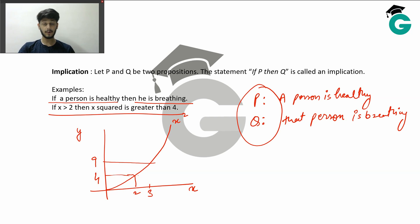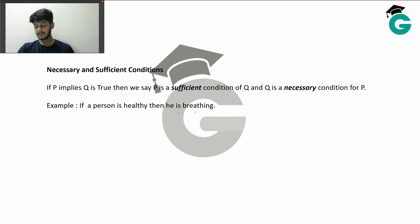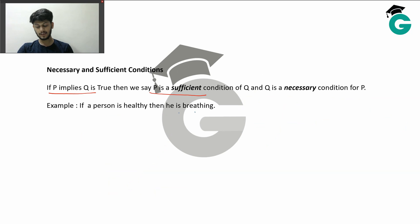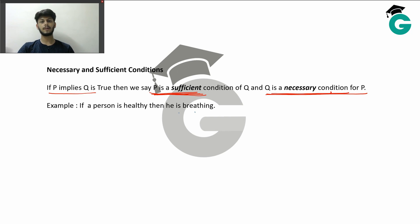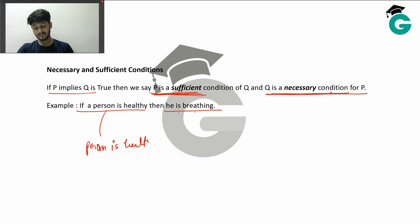Now let us move on to some terms you might find in your economics books: necessary and sufficient conditions. Going back to the implication — if P implies Q is true, then we say P is a sufficient condition. So in the example 'if a person is healthy, then he is breathing,' being healthy is a sufficient condition for that person to be breathing, which is true.